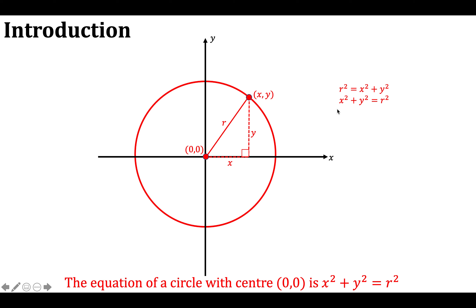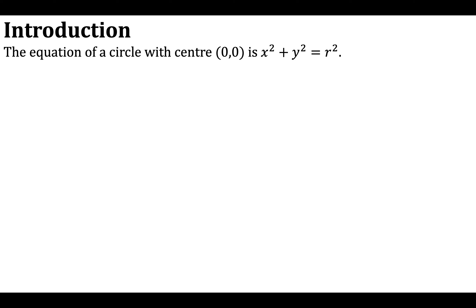But you can see the equation of the circle comes directly from Pythagoras' theorem, which you are familiar with. So let's work with this — x squared plus y squared equals the radius squared.